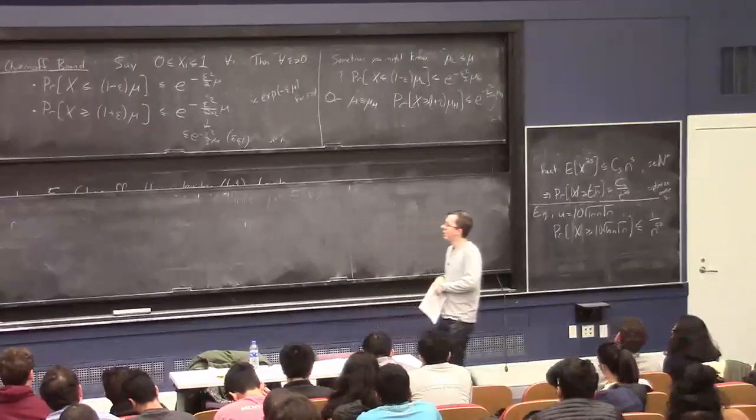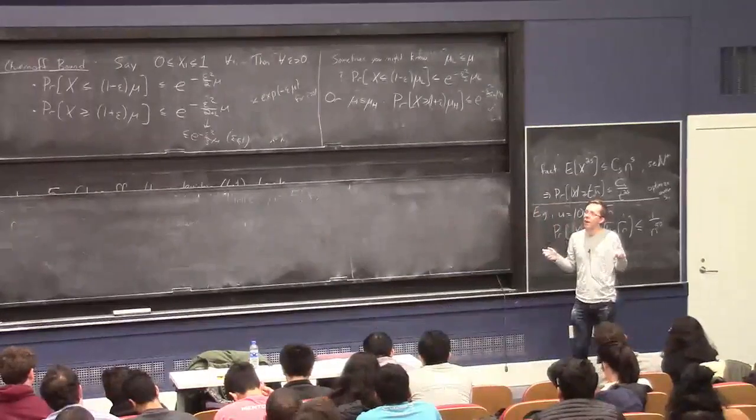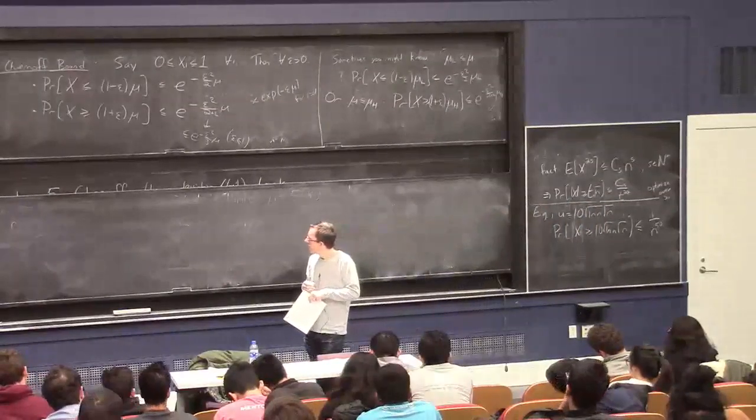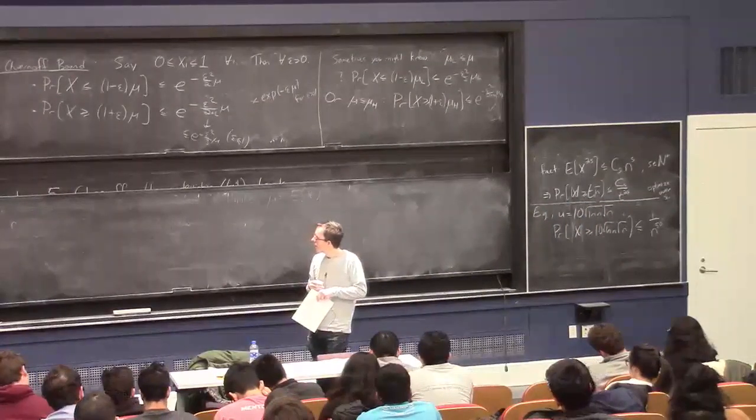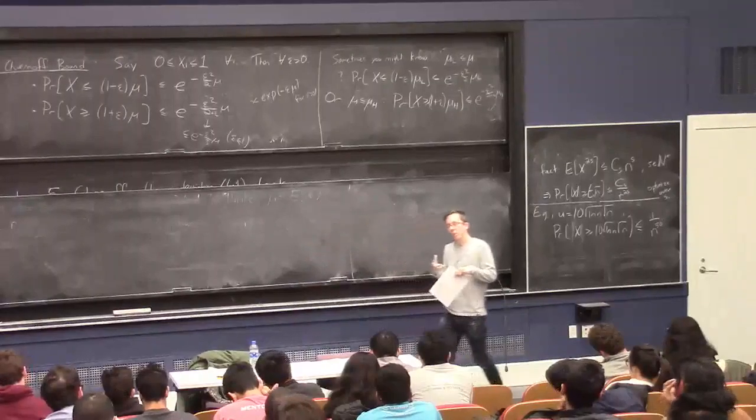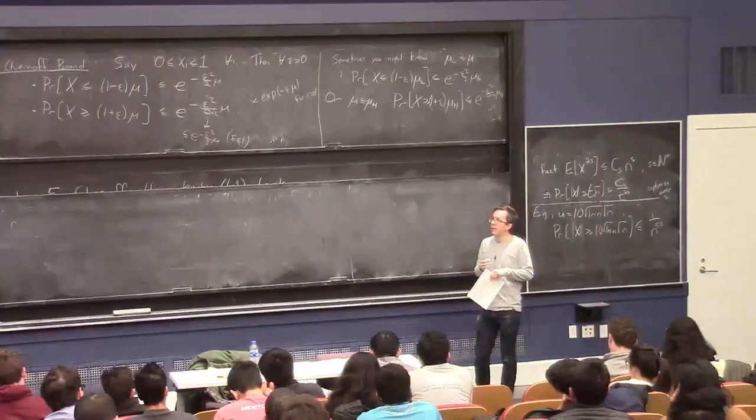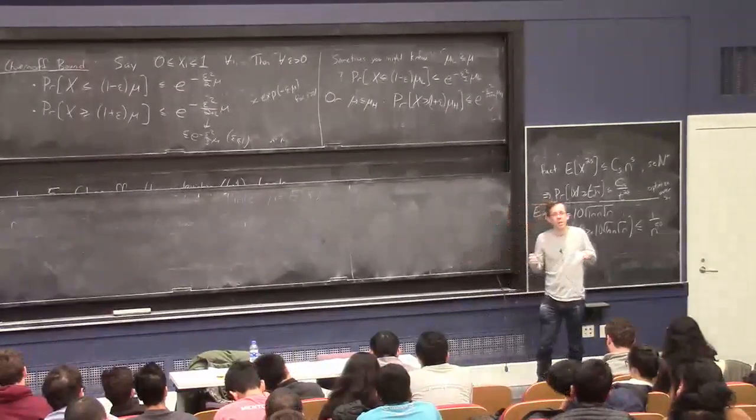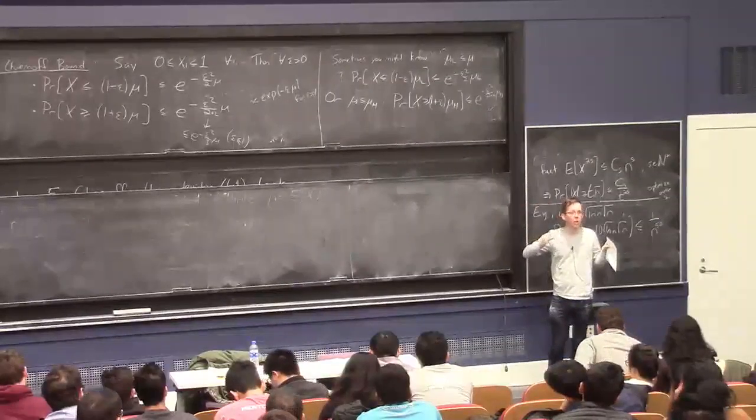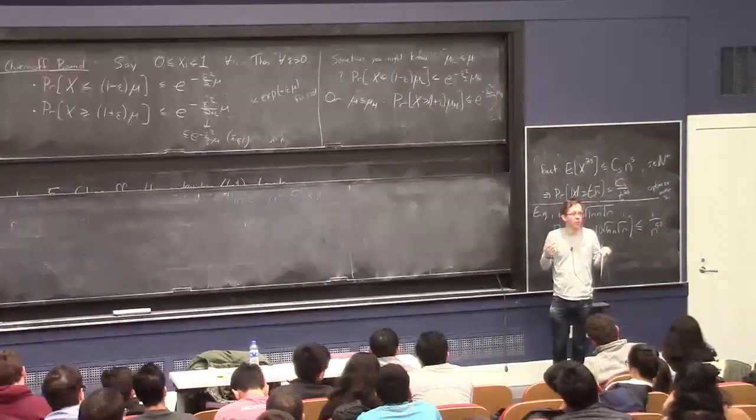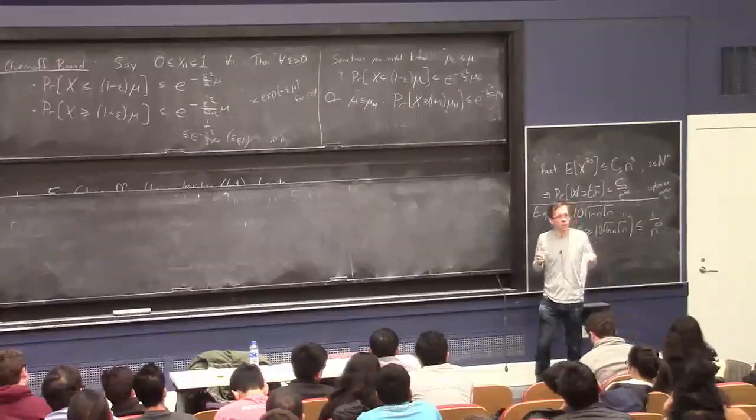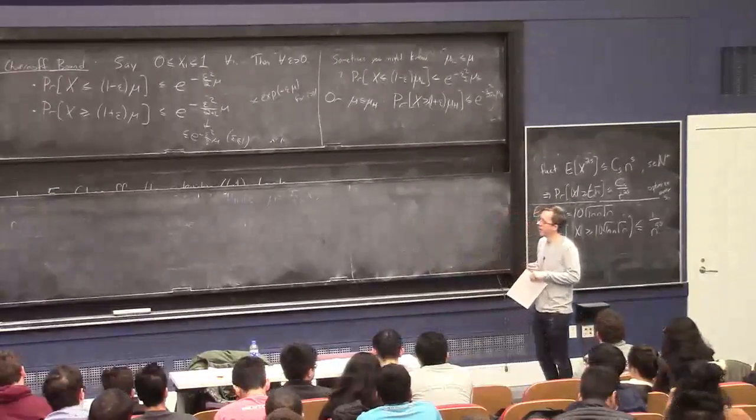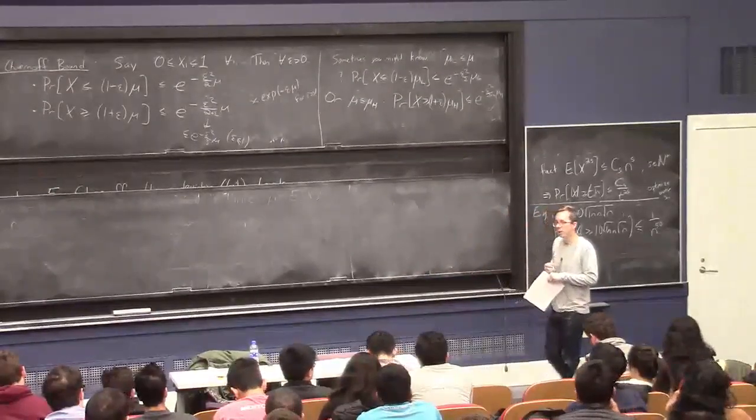Another example, when you don't have independent random variables, if you have n independent random variables, but you're not necessarily looking at the sum of them. You're only looking at some function of them. But this function has the property that if you change the value of any one out of the n random variables, it doesn't change f very much. So f has some kind of Lipschitz property. Then this is another case where Chernoff type bounds hold. And it's called McDiarmid's Inequality. You can take a look at that.